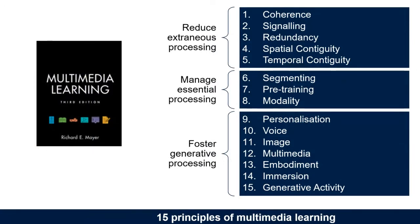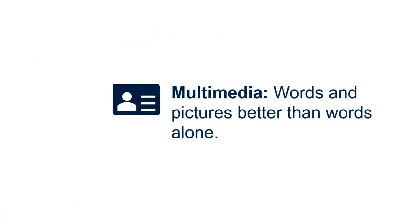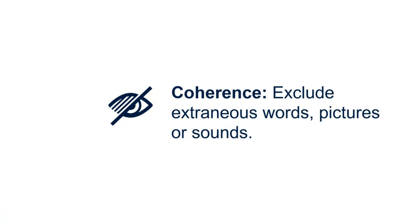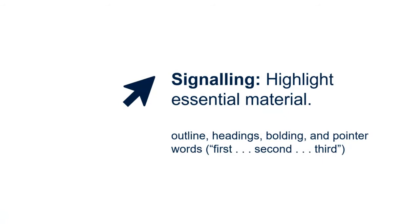I often see the principles of multimedia learning mentioned — based on that traditional research tradition. The number of principles is anywhere between 8 and 15; the latest version of the book has 15. Some examples: the multimedia principle — words and pictures are better than words alone; the coherence principle — exclude extraneous words, pictures, or sounds; the signaling principle — highlight essential material using outlines, headings, and bolding.